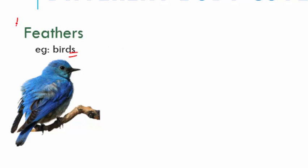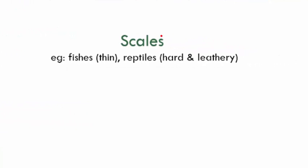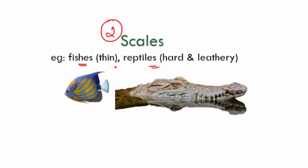The second one is scales. Can you think of which animals would have scales? Now scales are mainly seen in fishes and they're seen in reptiles. If you see in fishes, the scales will be very thin. Like this fish will have very thin scales. Whereas reptiles like your lizards and crocodiles will have very hard and leathery scales. So scales is the second one.